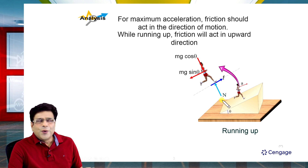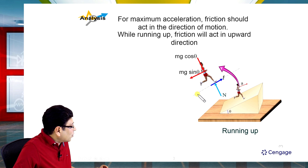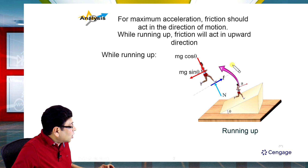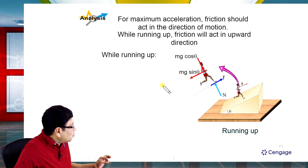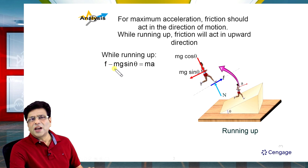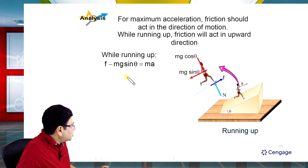Now let us write the equation of motion. The equation of motion: the man is moving in the upward direction with acceleration. That means net force acting on the man should be in the upward direction. So net force: small f minus mg sin θ equals mass multiplied by acceleration. We can write small f equals ma plus mg sin θ. This is the static friction.